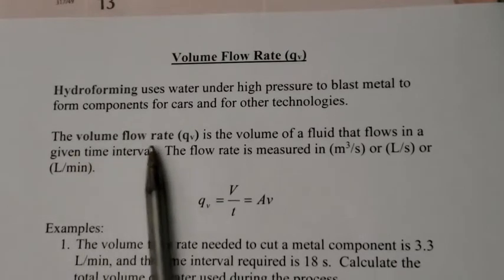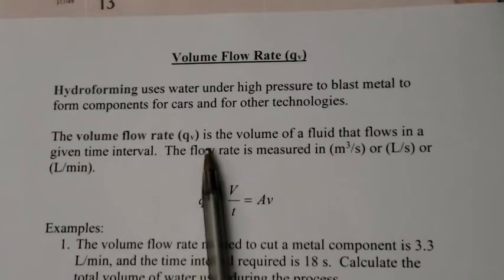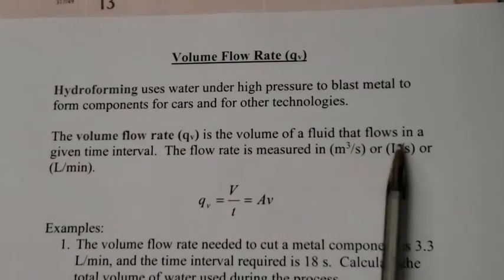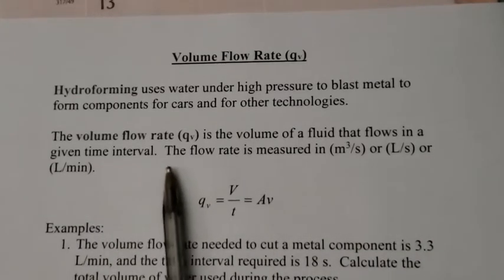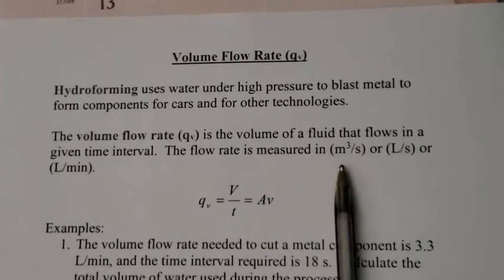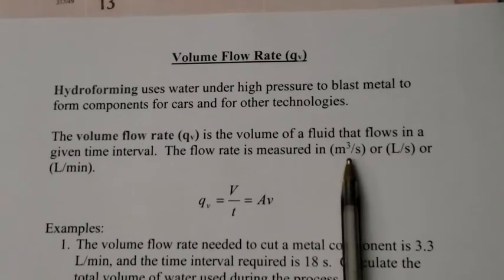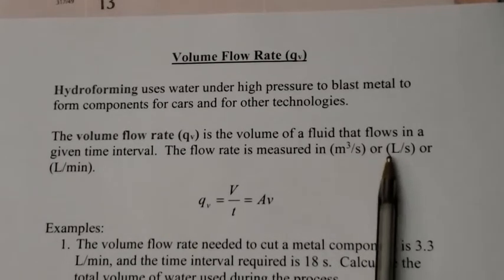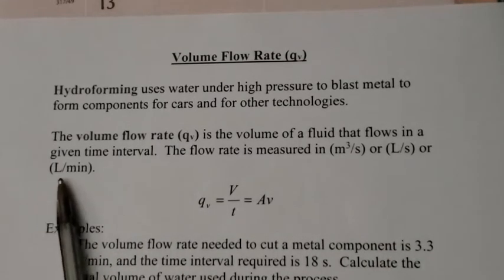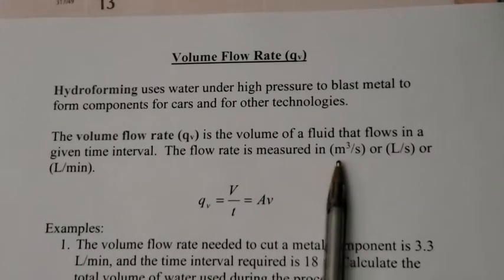That's called the volume flow rate, QV. It's the volume of fluid that flows in a given time interval. The flow rate is measured in either meters cubed per second, liters per second, or liters per minute. You have to look at your given information and what the units are—we're going to use that for our flow rate.